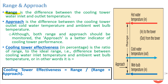Next, the terms range, approach, and cooling tower effectiveness are associated with cooling tower efficiency, and they define how to design a cooling tower. Range is the difference between your inlet and outlet water temperature. For example, if the inlet water temperature is 45°C and the outlet temperature is 34°C, then 45 minus 34 equals 11°C — so 11°C is your range.